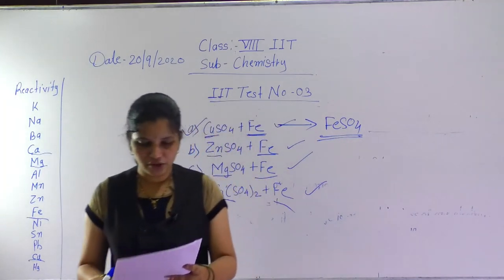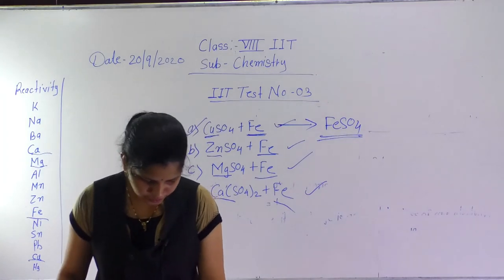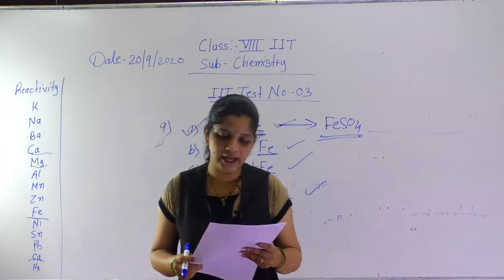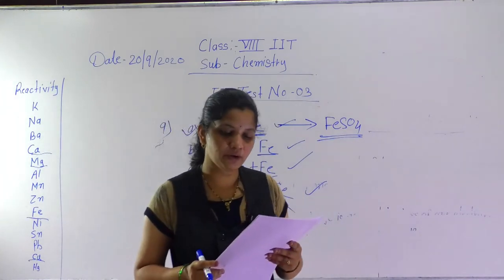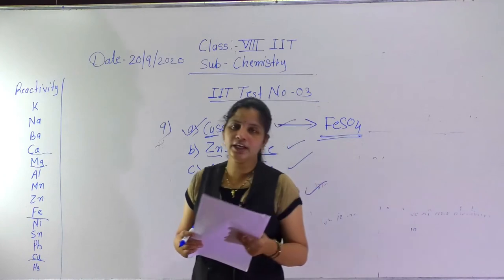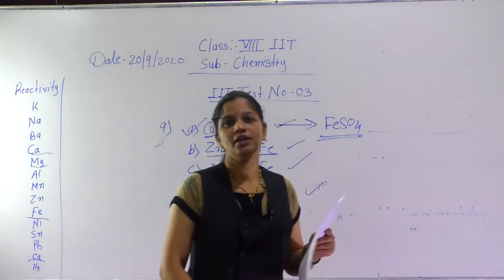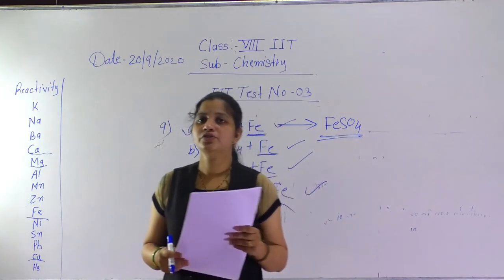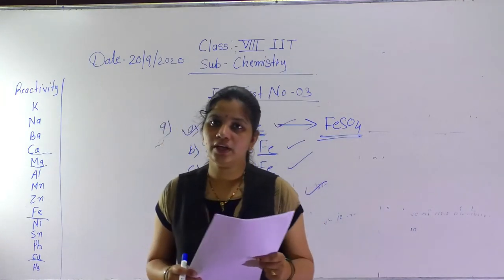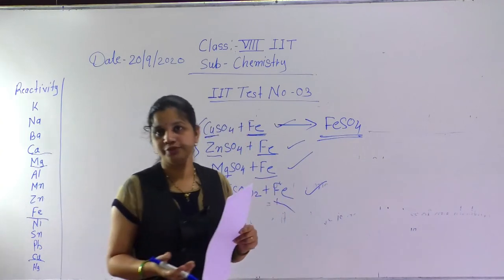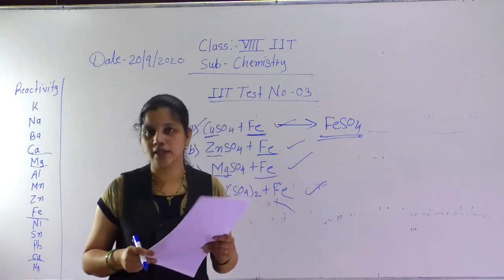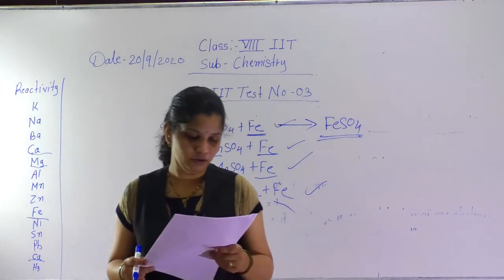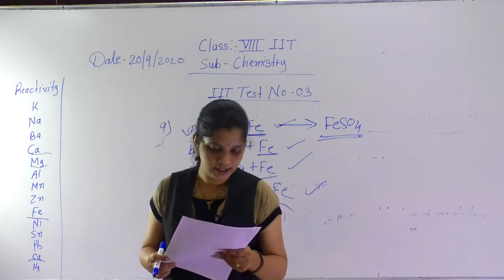Question number 10: galvanization is a method of protecting steel and iron from rusting by coating them with a thin layer of which metal? In the galvanization process, we coat the iron object with zinc to prevent rusting. The correct option is zinc — option C.